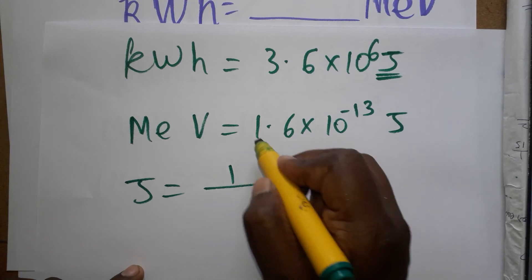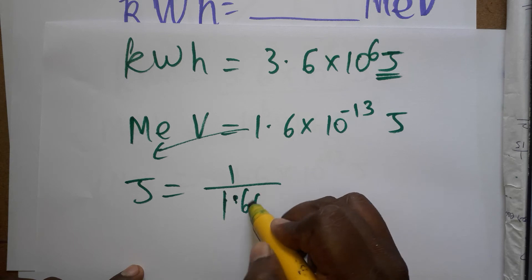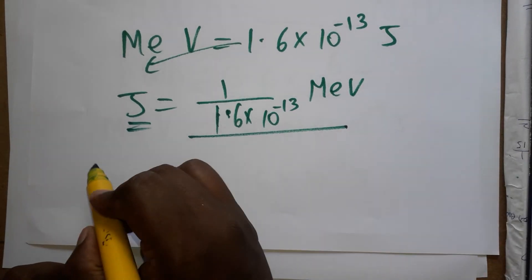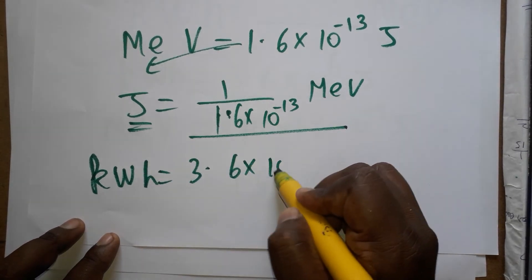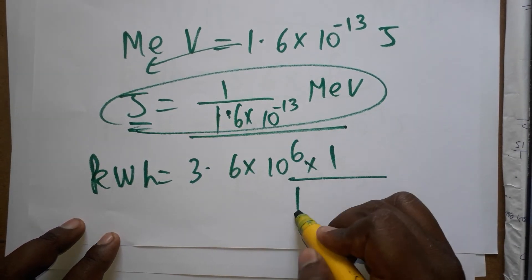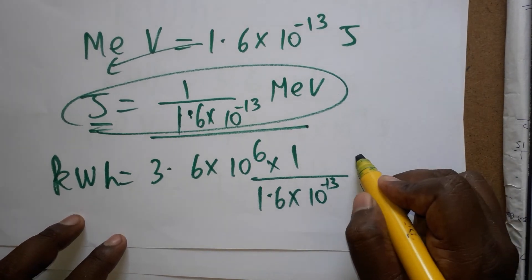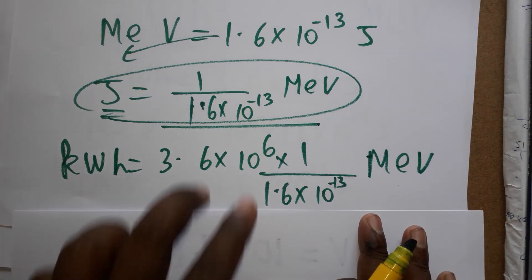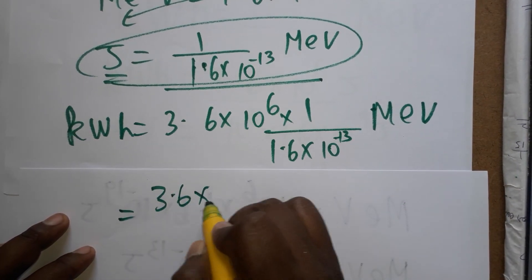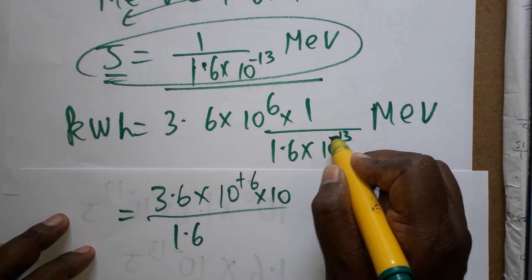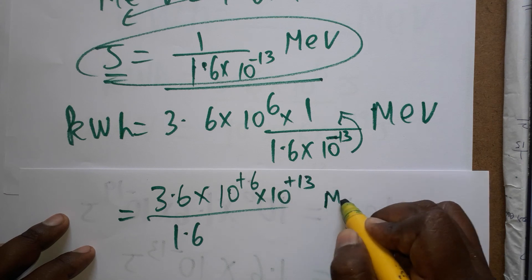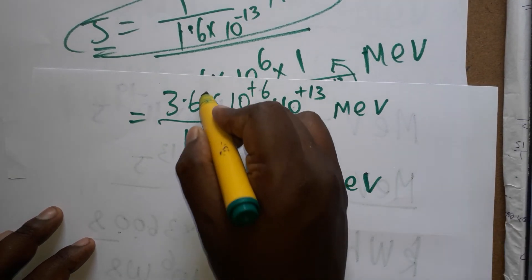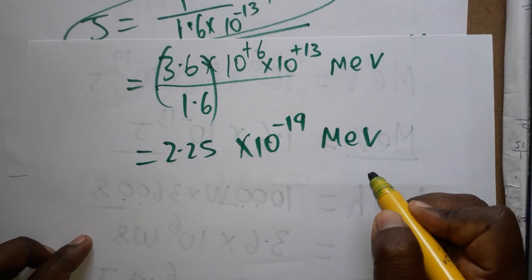So 1 kWh equals 3.6 × 10⁶ joules, multiplied by 1 divided by 1.6 × 10⁻¹³ MeV per joule. Bringing 10⁻¹³ from the denominator to the numerator, it becomes 10⁺¹³. So we have 3.6 × 10⁶ × 10¹³ divided by 1.6, which gives 3.6 divided by 1.6 × 10 to the power 19. That division gives 2.25, so the result is 2.25 × 10¹⁹ MeV.